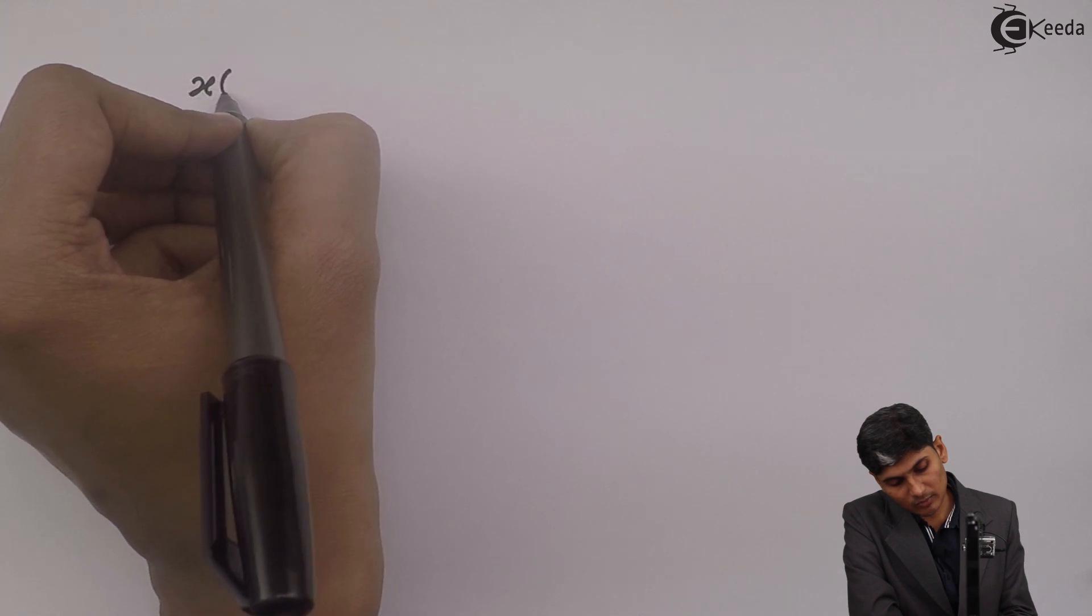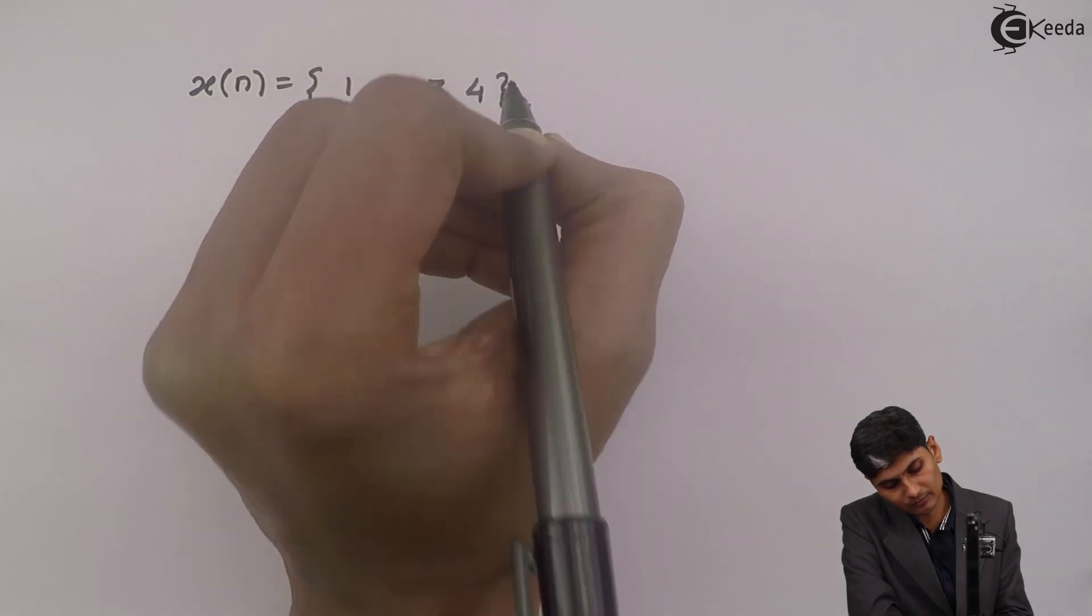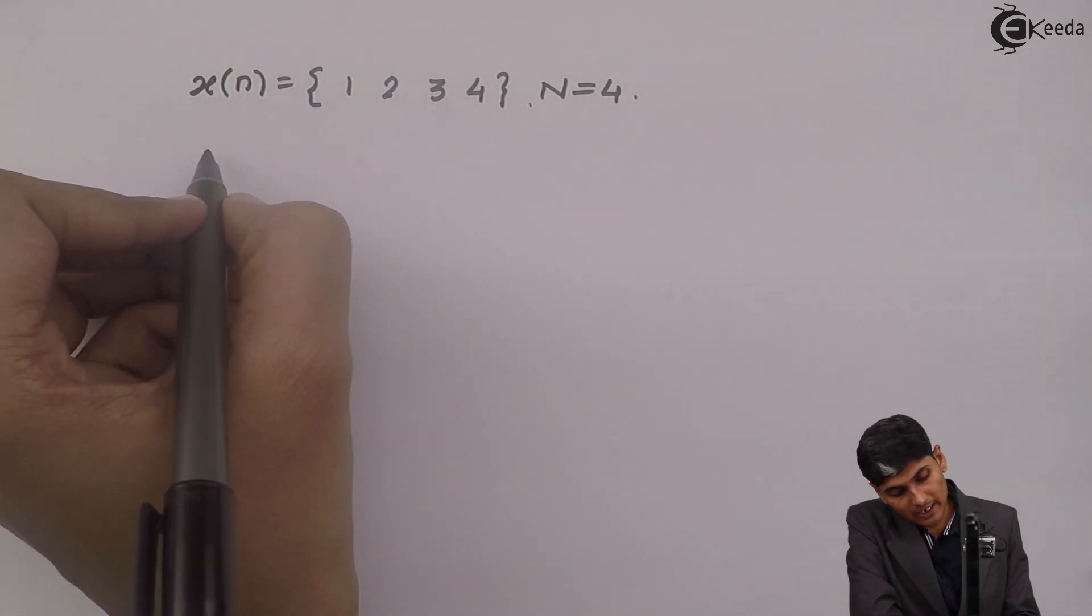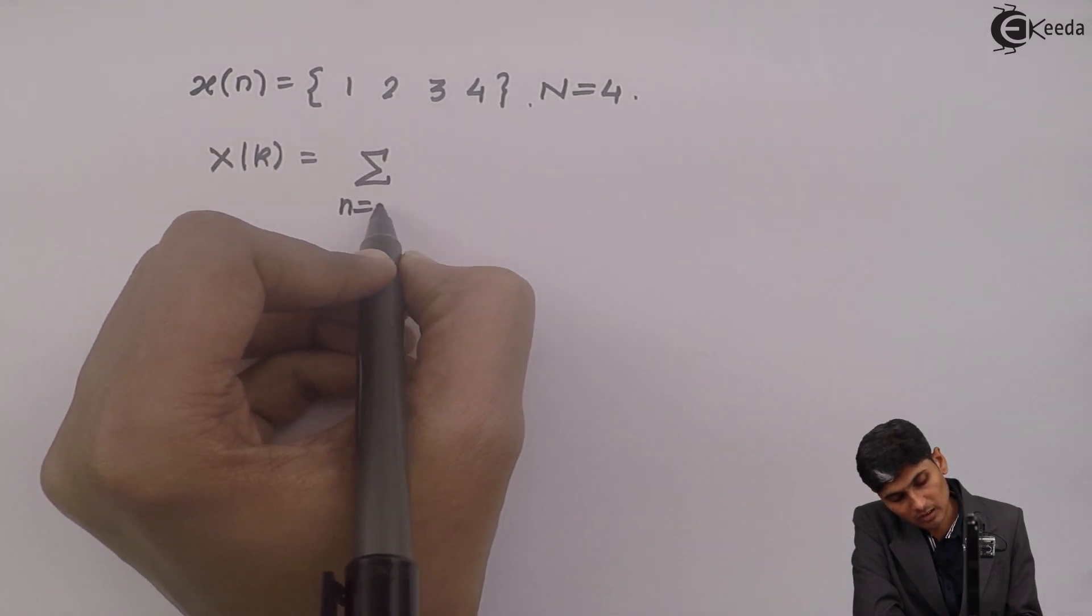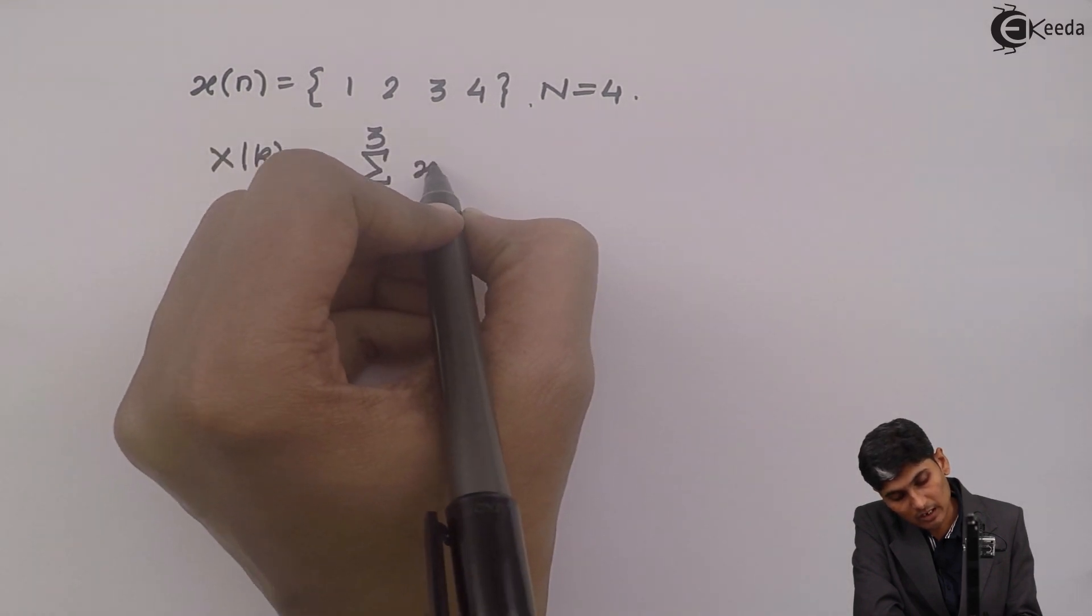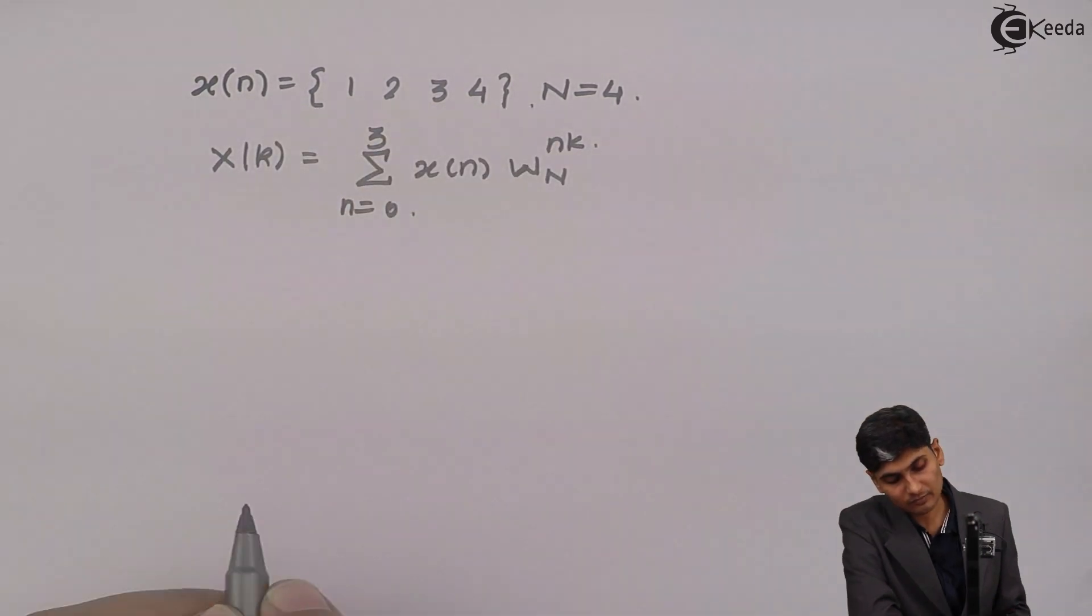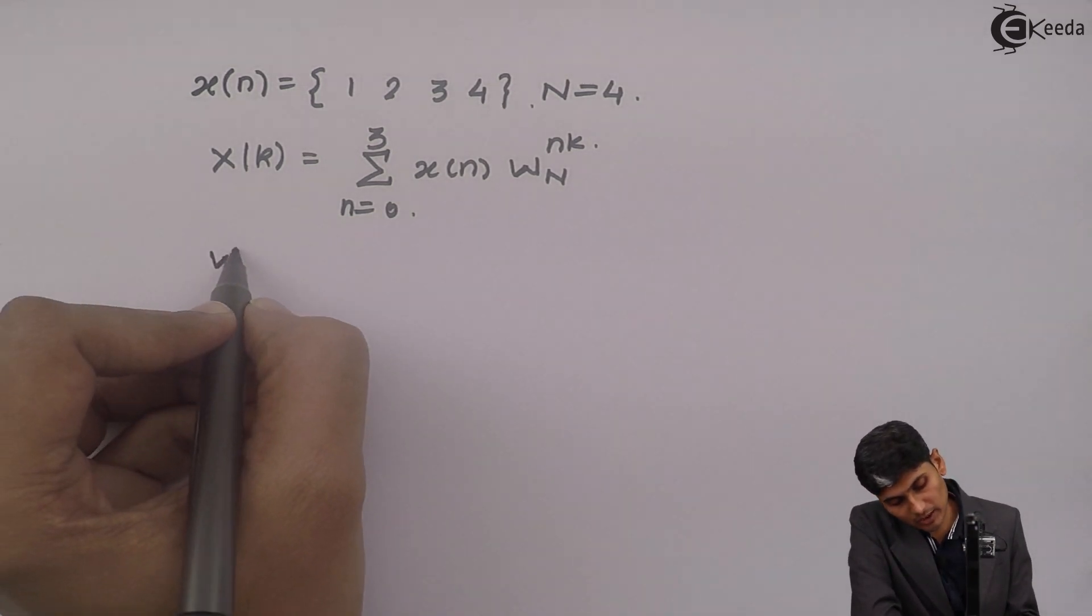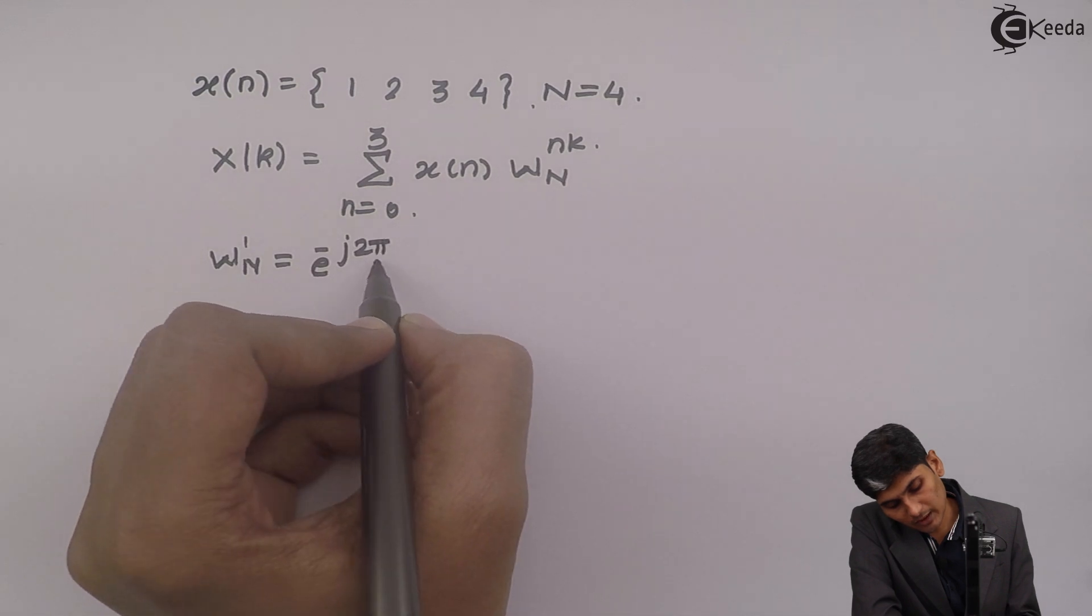For example, if I take a sequence x(n) which is 1, 2, 3, 4 where n is equal to 4, then my x(k) according to the definition is having sum from 0 to 3 x(n) w_N raised to nk. If we open up the bracket where my w_N raised to 1 is nothing but e raised to minus j 2π by n.